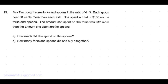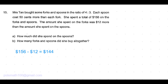Part A of the question is: how much did she spend on the spoons? She spent a total of 156 dollars on forks and spoons, and she spent 12 dollars more on forks. So let's subtract that 12 dollars. The remaining is 144 dollars, which is equally spent on forks and spoons.